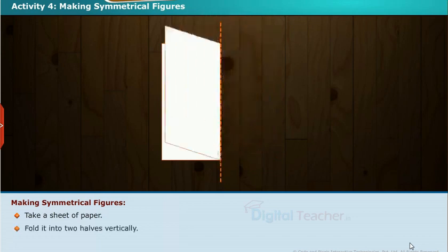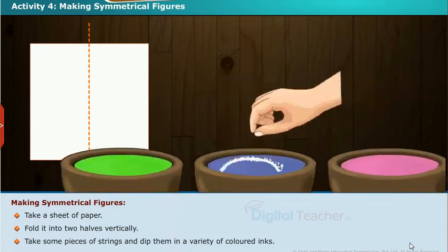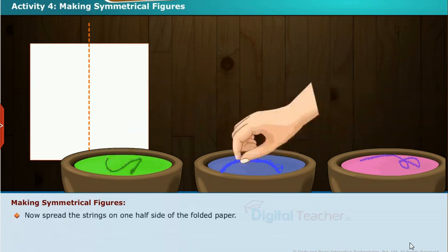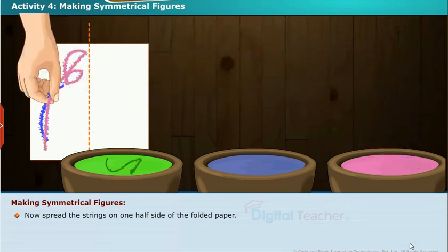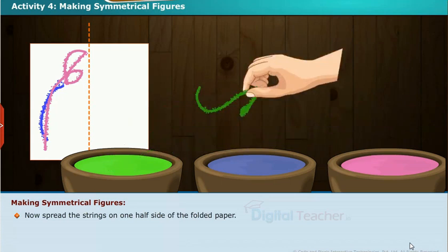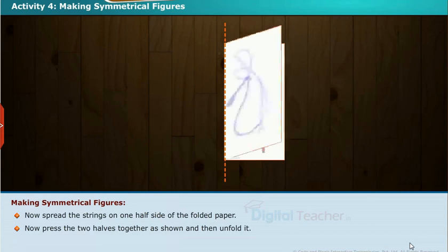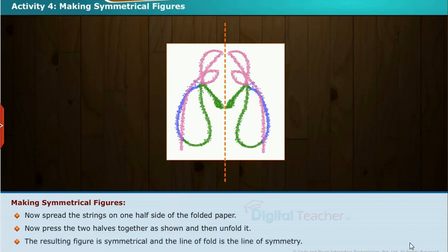Here we are going to make symmetrical figures. Take a sheet of paper and fold it into two halves vertically. Take some pieces of string and dip them in a variety of colored inks. Spread the strings on one half of the folded paper, then press the two halves together and unfold it. The resulting figure is symmetrical and the line of fold is the line of symmetry.